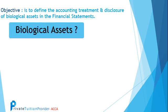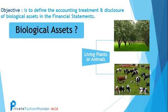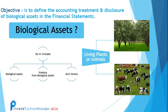What is a biological asset? Living plants such as gardens, and animals such as sheep, goats and cows. IAS 41 deals with the biological assets, produce from the biological assets, and government grants.